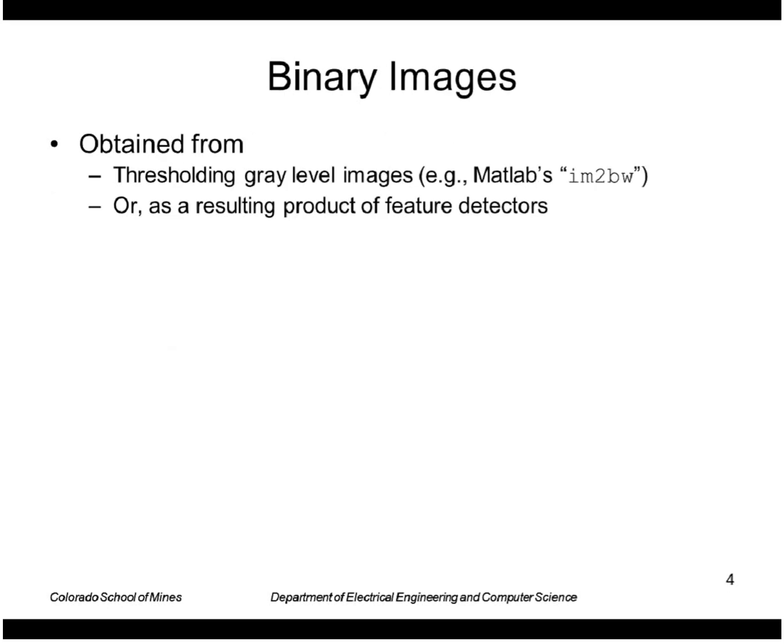So first of all, where do binary images come from? We can get them by thresholding as we've seen before. MATLAB actually has a function called IM to BW, image to black and white, which does thresholding. A little bit later in the course we'll see how to select the threshold value automatically.